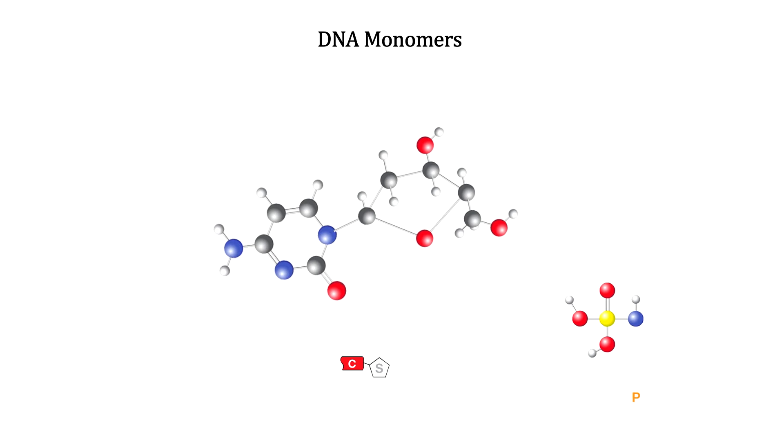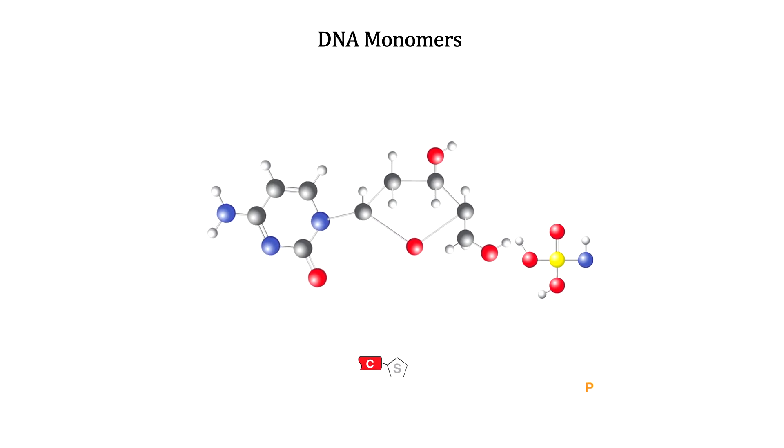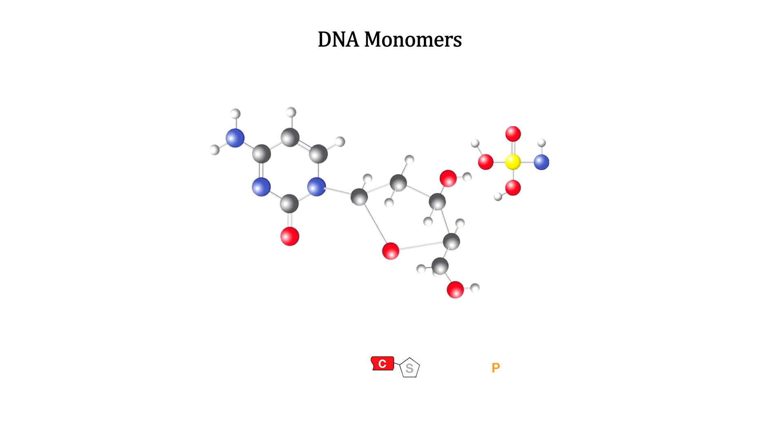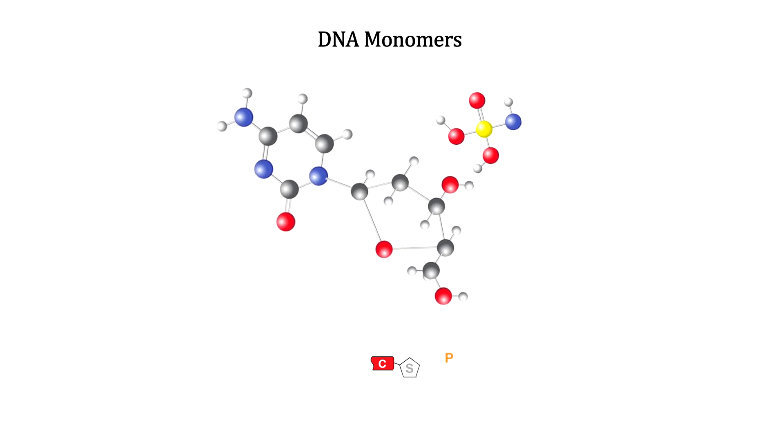Next, we have the bonding of the new larger molecule, called a nucleoside, with a phosphate group. Again, old bonds are broken and new bonds are formed. This is a DNA monomer, a nucleotide, a building block of DNA.